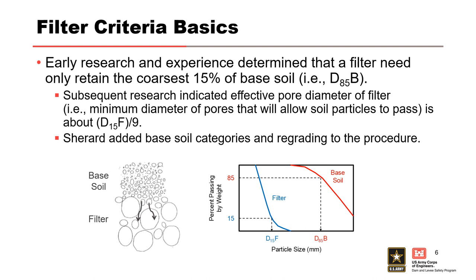Terzaghi is generally credited with the development of modern filter criteria, but Sherrard in 1984 conducted a laboratory study adding base soil categories and regrading to the procedure. If the D85 of the base soil is the same size as the effective pore diameter of the filter, then the D15 of the filter equals 9 times the D85 of the base. This criterion applies to base soil category 1, which are soils with fines contents greater than 85%.